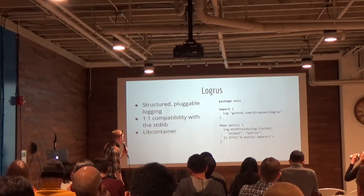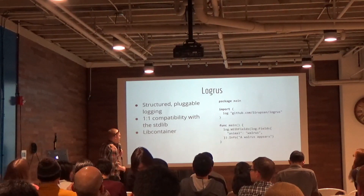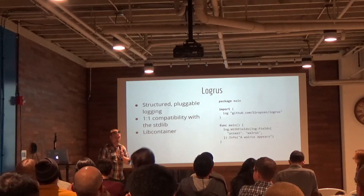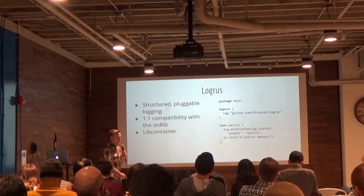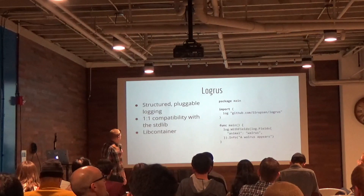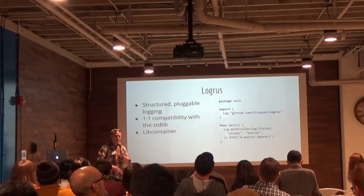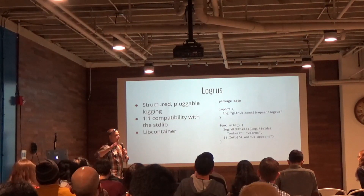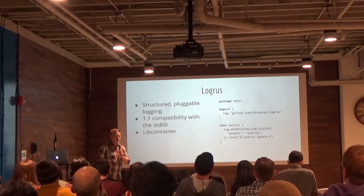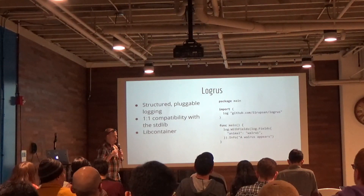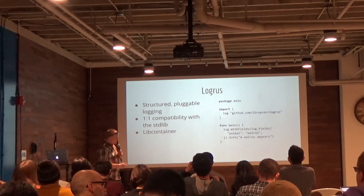A little bit about Logrus: it's structured and it's pluggable. When I say pluggable, you can actually replace it with the standard library interface, which is super useful. You can use it out of the box and it's not very hard to configure. One of the biggest projects it's in is libcontainer, which is the base library for all interfaces for Docker and Rocket and things like that. So you'll find it all over the place.